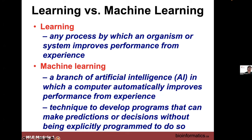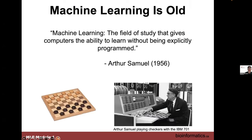Machine learning is considered a technique for self-programming that allows making predictions or decisions without explicitly being programmed to do so — a really important distinction from general programming. Machine learning is not that new; Arthur Samuel is considered its founder and provided a definition back in 1956, almost 70 years ago: 'Machine learning is a field of study that gives computers the ability to learn without being explicitly programmed.'